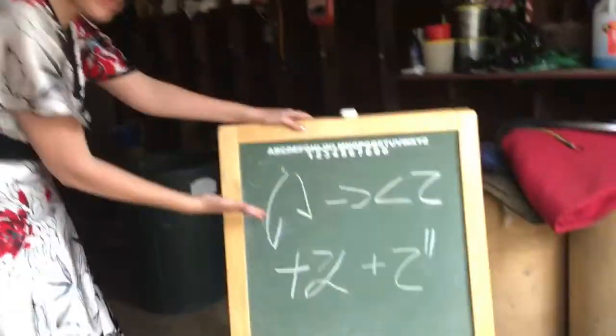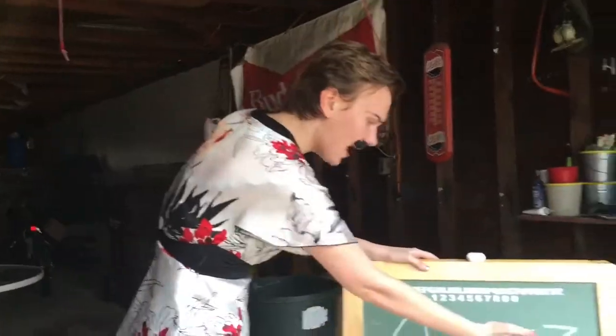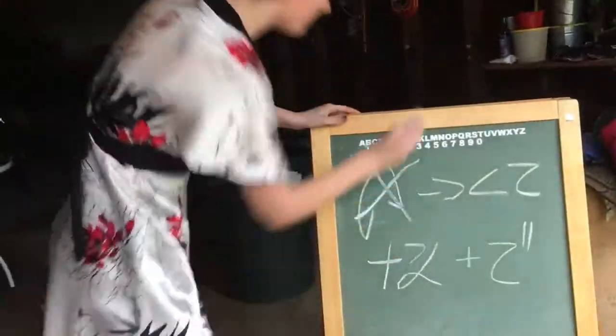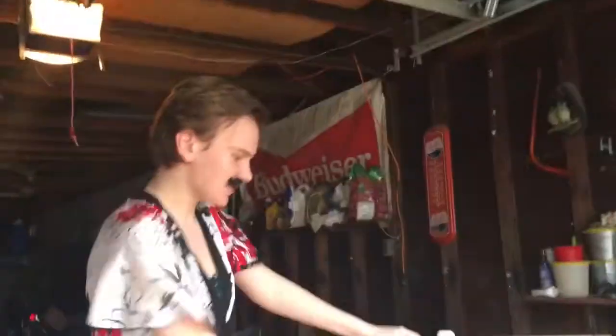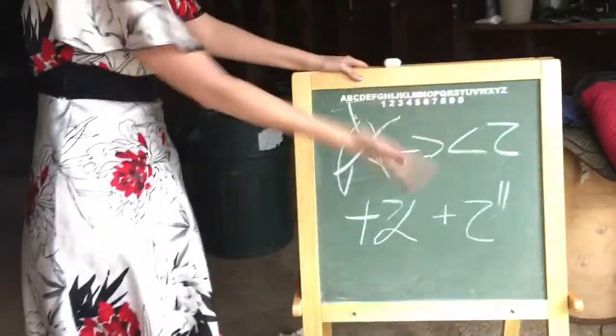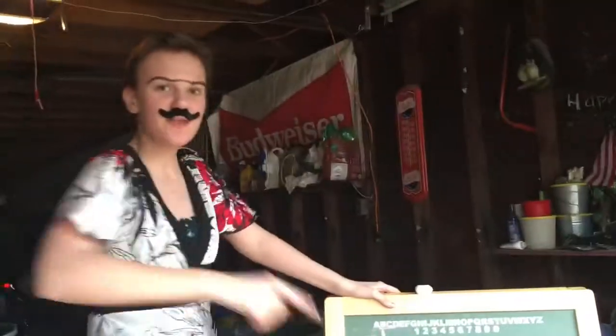Now that you know some adjectives, it's time to put them in a series. If you have an i-adjective, drop the i and add -kute. Drop the i and add -kute. If it's a na-adjective, just add -de.